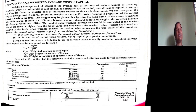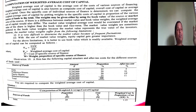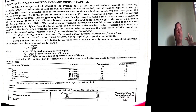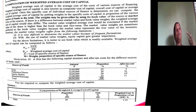For example, if equity is 1,60,000 and total capital is 16 lakh, then 1,60,000 divided by 16 lakh gives a proportion of equity of 10%. If total capital is 10 lakh and debt is 5 lakh, then 5 lakh divided by 10 lakh equals 0.50 — so 50% is the weight of debt in total capital.